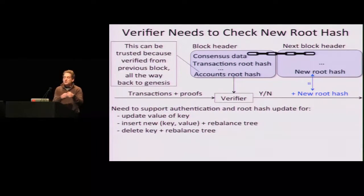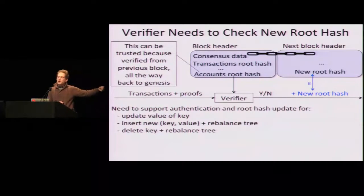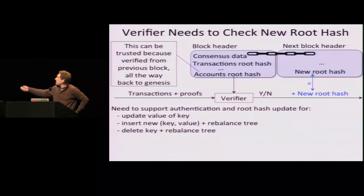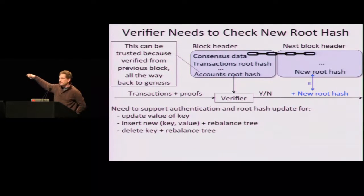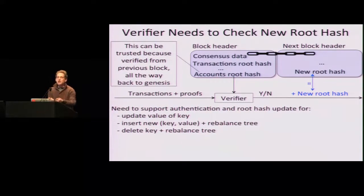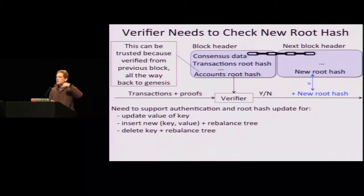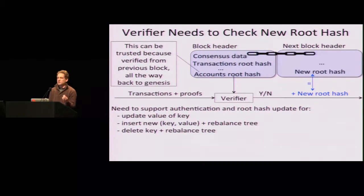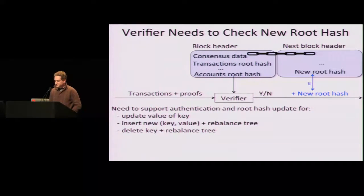If we manage to do that, we can go all the way back to the Genesis block, verify from the beginning, and that's how we really know this root hash can be trusted. What we want is to be able to compute the next root hash when changes take place. We know what the changes are — they are the transactions that are included. But we need to perform them without having the entire Merkle tree; we need to compute the new root hash without having the tree that stores the key values.